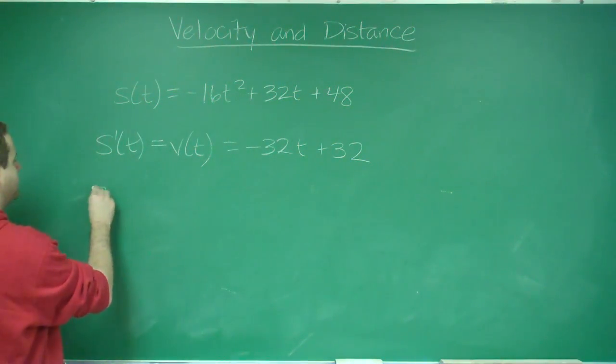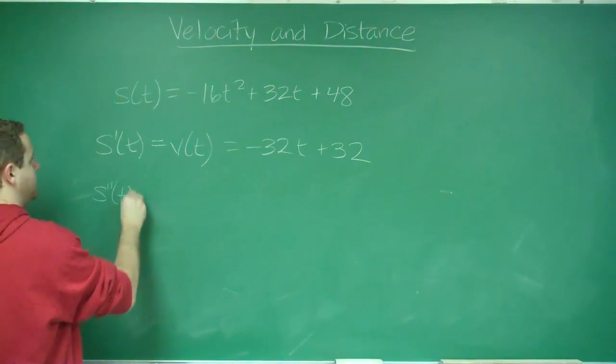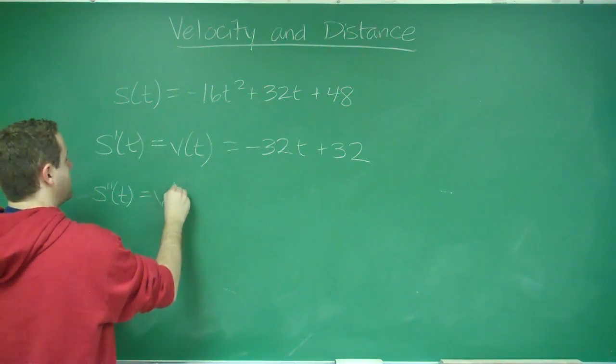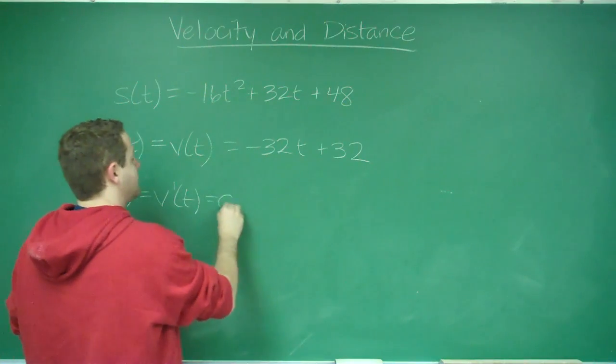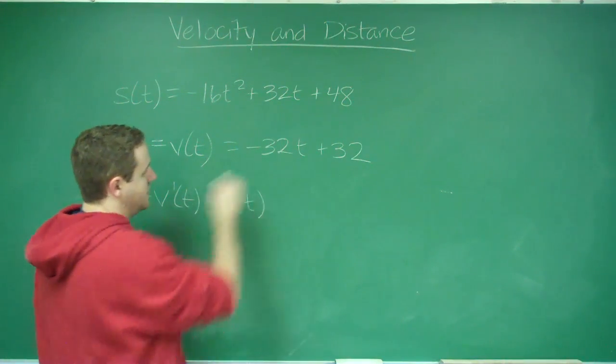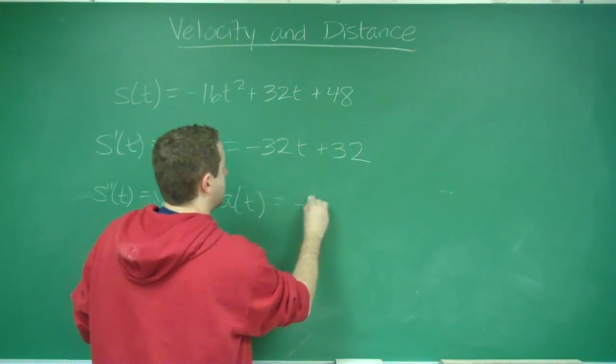And furthermore, if you take one more derivative, S double prime of t, which would be V prime of t, that is called the acceleration. In this case, that would just be negative 32.